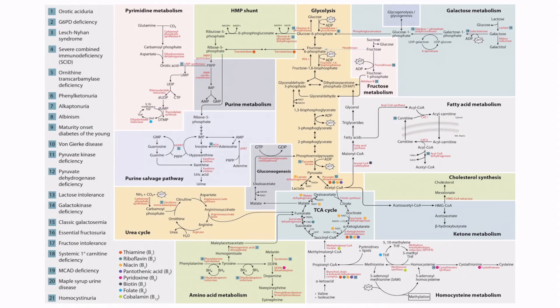This is the metabolic map provided in section 1 of Metabolism. In this video, we're focusing on the HMP shunt — this pathway can be seen right here. Many of the pathways occur in the cytoplasm and the mitochondria. However, the HMP shunt occurs exclusively in the cytoplasm. This is important because if you are given a list of enzymes, you'd be expected to know which are only present in the cytoplasm versus which are present in the cytoplasm and the mitochondria.